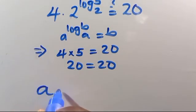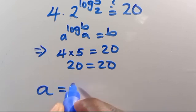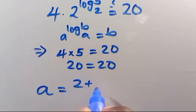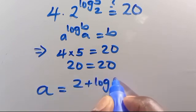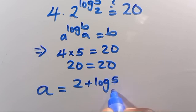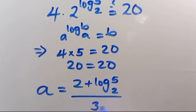This confirms that A equals 2 plus log₂5 over 3 is correct.